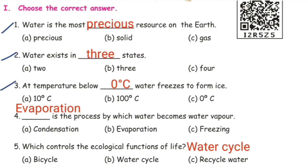Third one: at temperature below dash, water freezes to form ice. Options: 10 degree Celsius, 100 degree Celsius, 0 degree Celsius. Answer: 0 degree Celsius. Below 0 degree Celsius, water freezes to form ice.